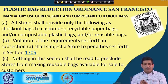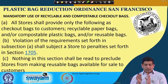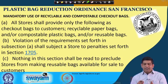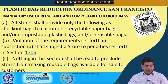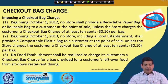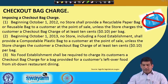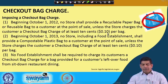The plastic bag reduction ordinance was passed in San Francisco around 2012. All stores will provide only the following checkout bags: recyclable paper bags, compostable plastic bags, or reusable bags. Violations carry real penalties. No stores will provide a recyclable paper bag or reusable bag to a customer at the point of sale unless the store charges the customer 10 cents per bag, just to have uniformity so that one store is not charging while another is not.